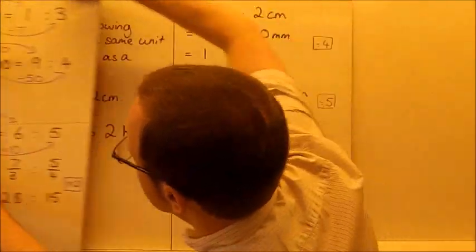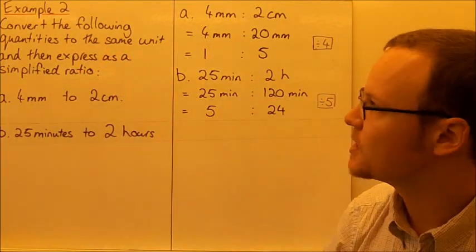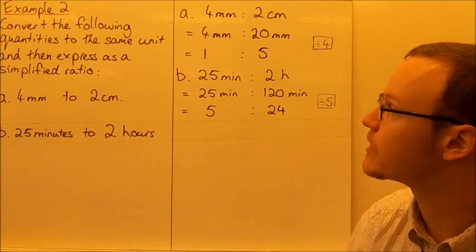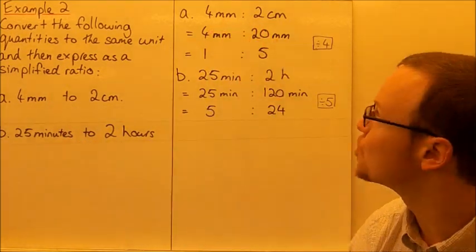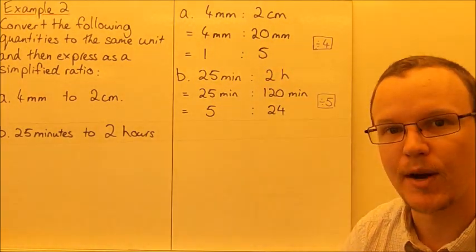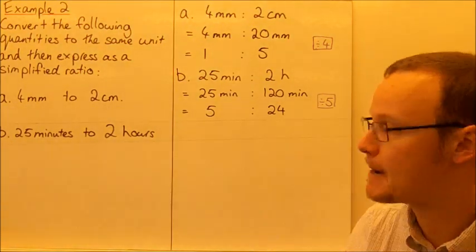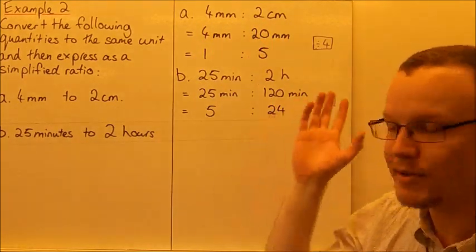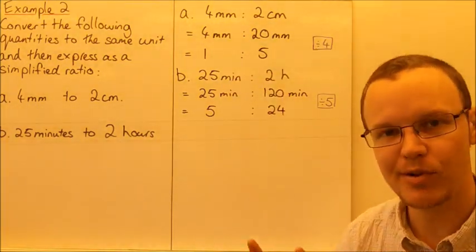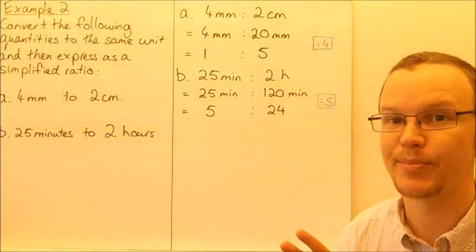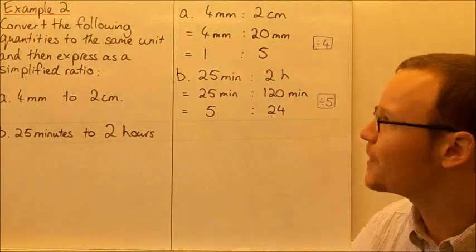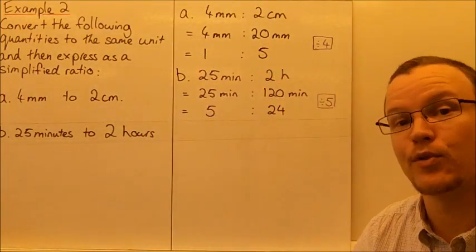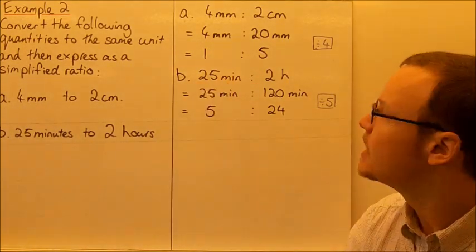Now let's look at converting quantities to the same unit and then expressing them as a simplified ratio. We've got four millimetres to two centimetres. We can convert the two centimetres to millimetres quite easily — there are ten millimetres in one centimetre, so we multiply by ten. Four millimetres stays as four millimetres, but two centimetres times ten is twenty millimetres. Now they're in the same units we can treat it as a ratio and remove those units, since they're both measuring length. The highest common factor of four and twenty is four, so dividing both by four gives one and five. The ratio for these lengths is one to five.